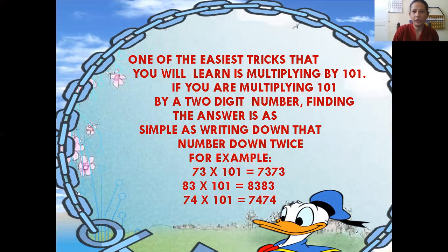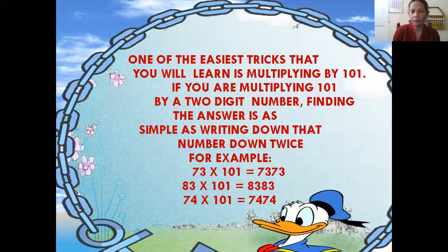Multiply by 101. This is one of the easiest tricks that you will ever learn. Here you have to multiply the digits by 101. Case 1: your first case is if you are multiplying 101 by a two-digit number, then you will find out the answer very simply.